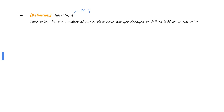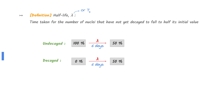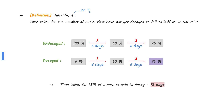The half-life is defined as the time taken for the number of nuclei that have not yet decayed to fall to half its initial value. Initially, the amount of undecayed nuclei is 100%. After one half-life, this amount falls to 50% and the amount of decayed nuclei increases from 0 to 50%. After another half-life, the amount of undecayed nuclei is 25% and the amount of decayed nuclei is 75%. Two half-lives have passed for 75% of the pure sample to decay. Therefore, the answer is 12 days.